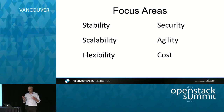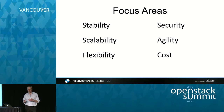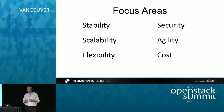The focus areas for us — number one, of course, is stability. Even though the executive says cost is important, the first thing they keep in mind is stability. If the platform goes down, it being cheaper when it goes down is not going to work. So stability was the number one requirement for us.